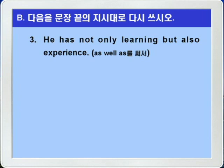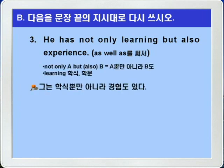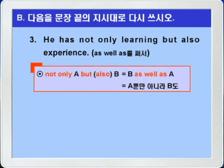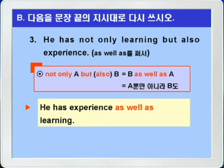3번입니다. He has not only learning but also experience. learning은 '학식'이라는 뜻입니다. not only A but also B를 as well as를 써서 바꾸려면, B as well as A 형식으로 A와 B의 순서가 바뀝니다. 정답: He has experience as well as learning.